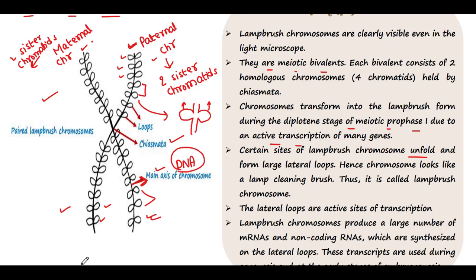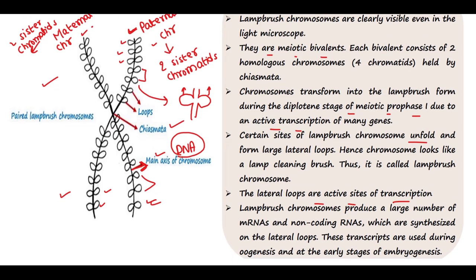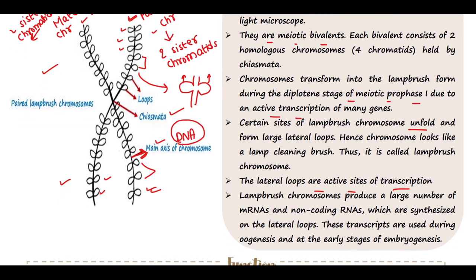The lateral loops are active sites of transcription. Lampbrush Chromosomes produce a large number of mRNAs and non-coding RNAs, which are synthesized on the lateral loops.